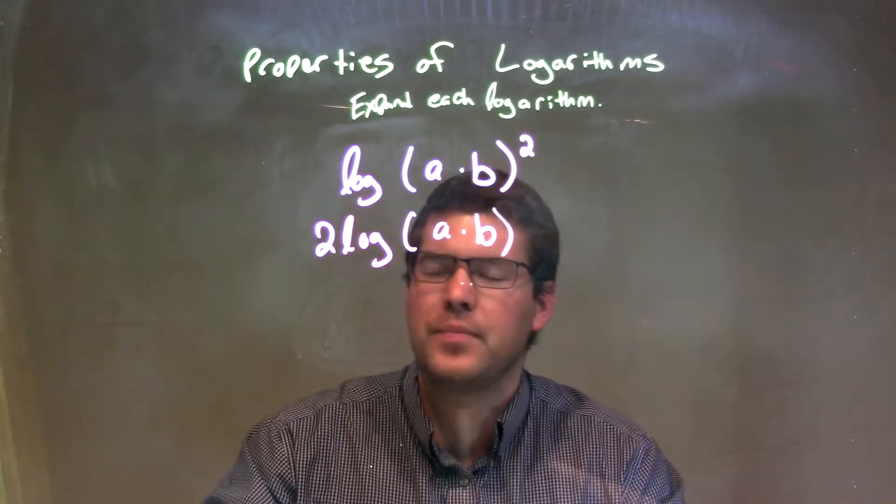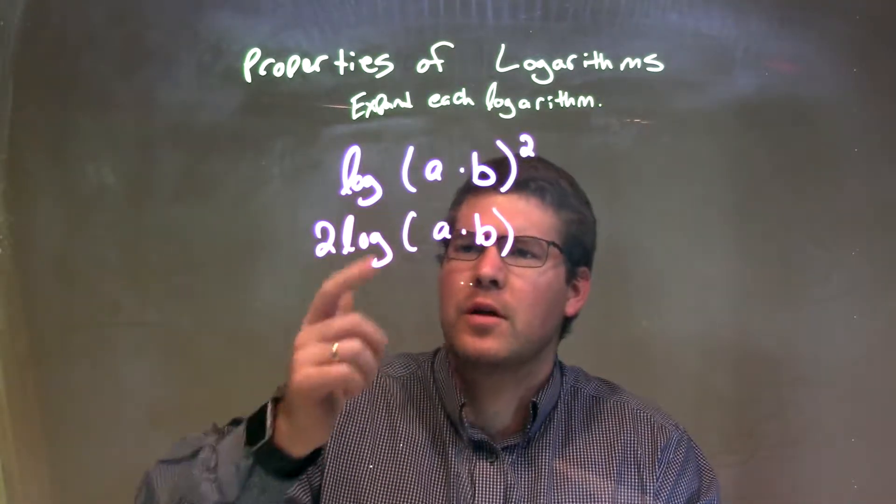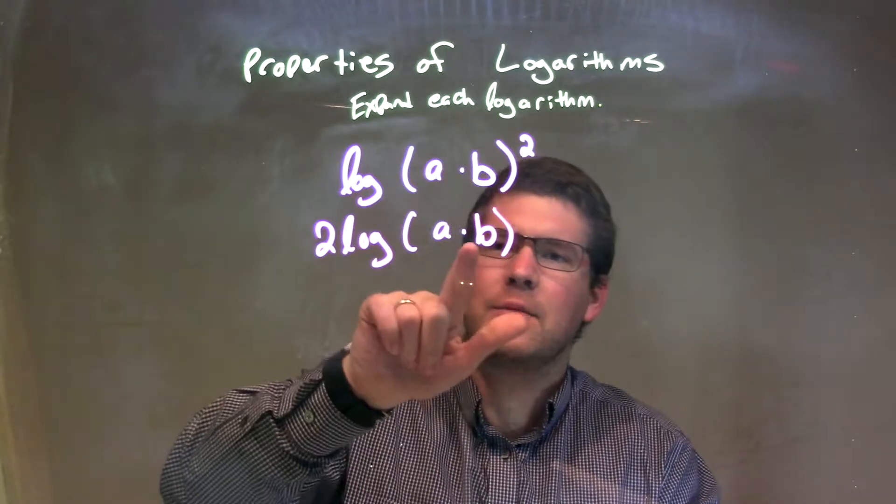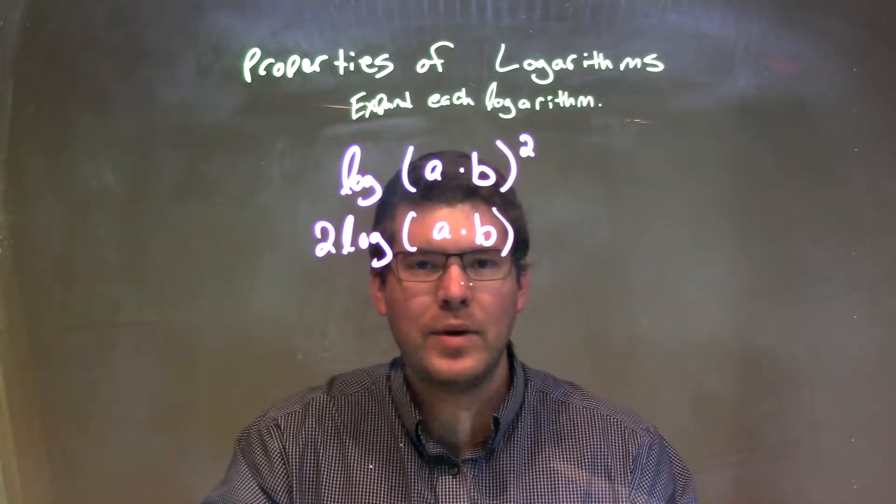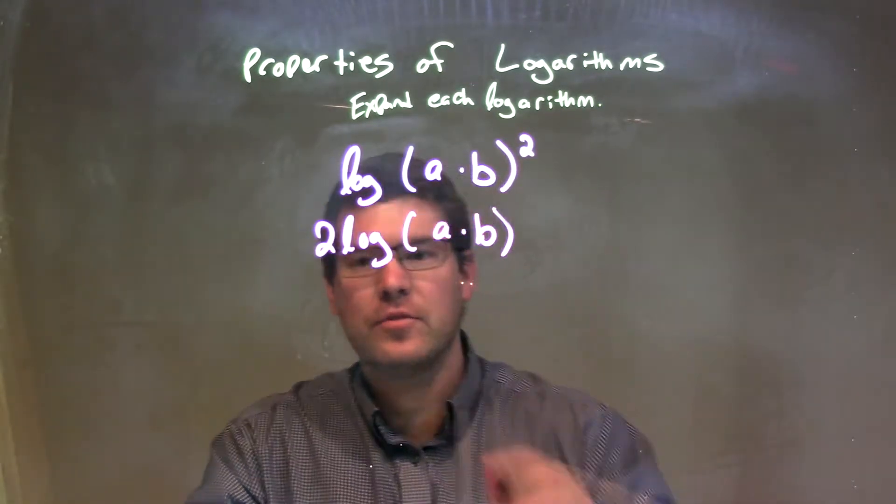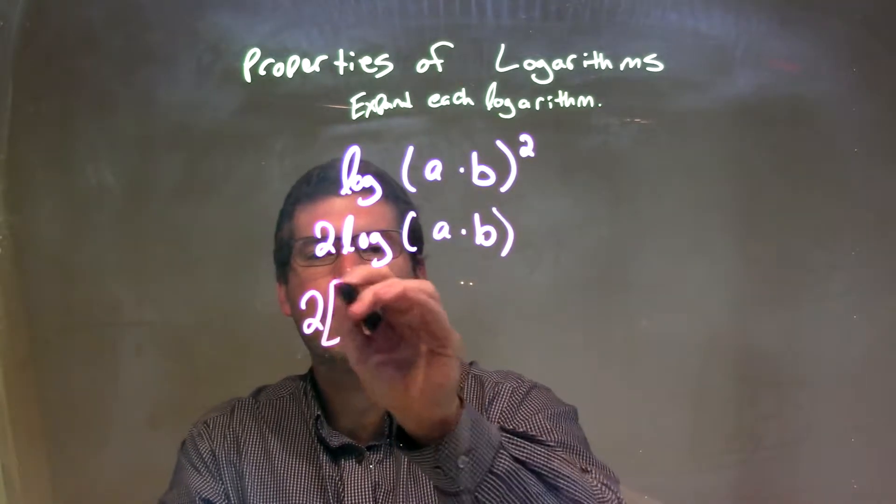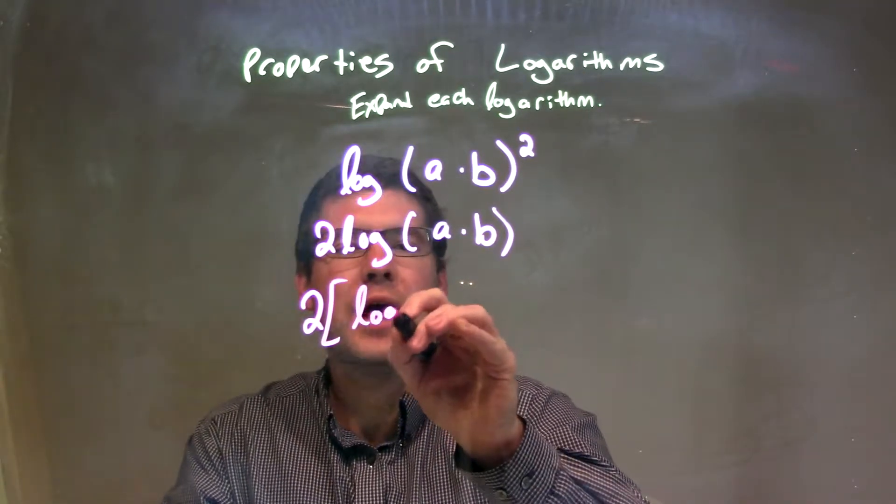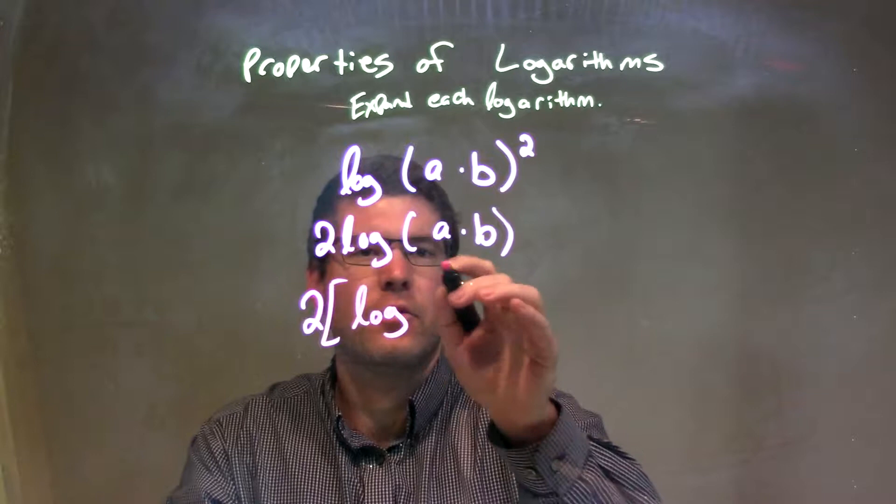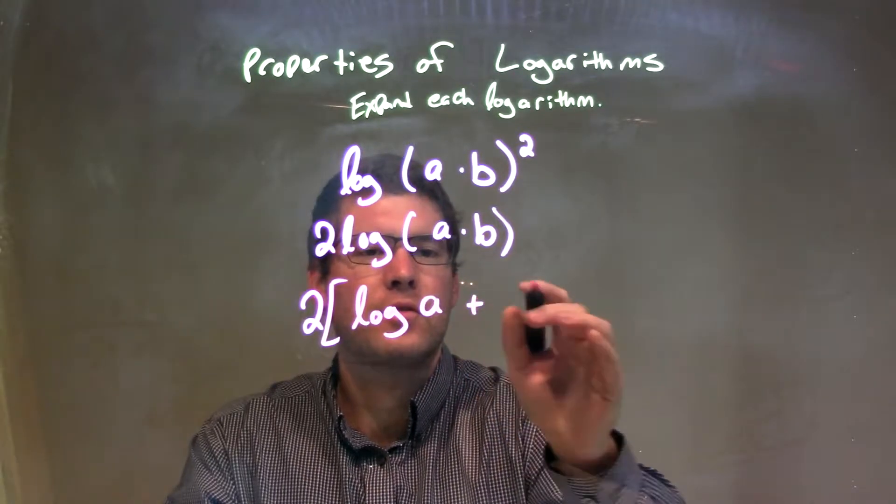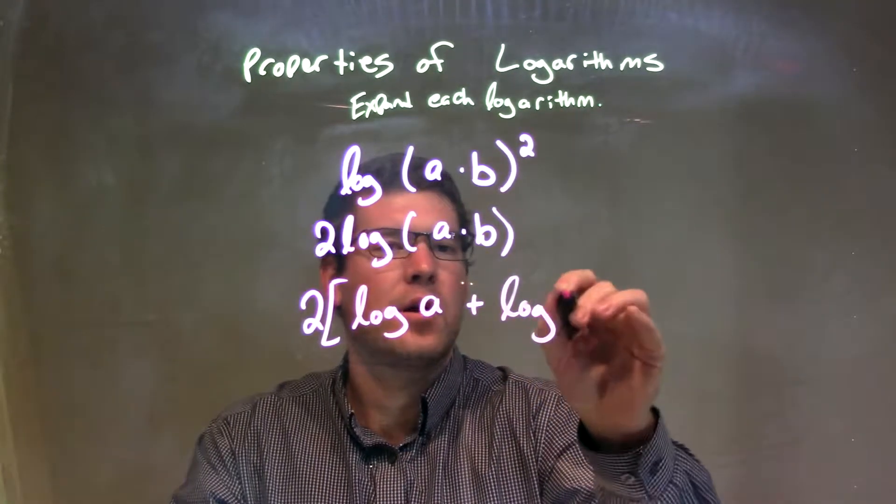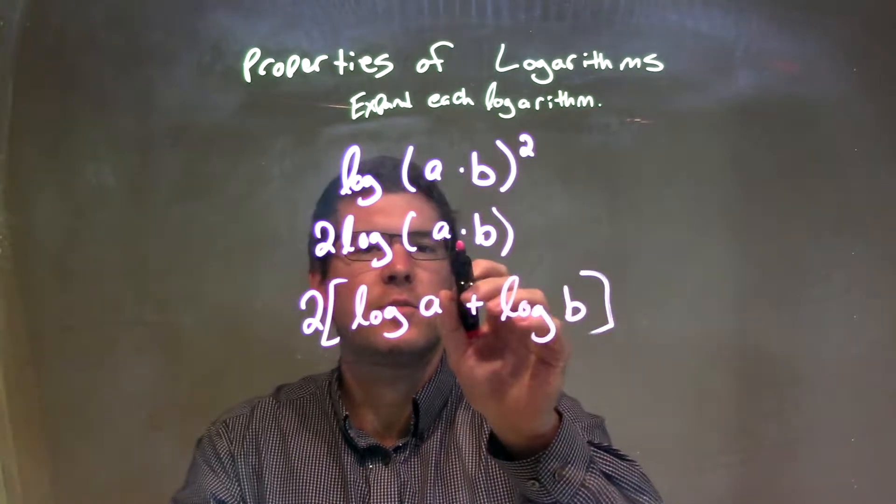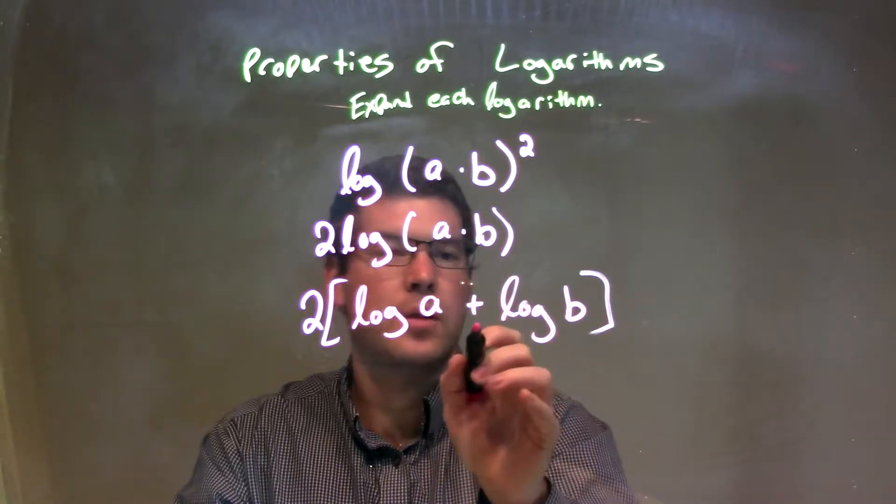Okay, pretty simple so far. Well, that 2 out front, log of a times b - I need to keep separating that multiplication. We know that can be an addition, so when I write my 2 out front, I'm going to bracket in this expansion: log of a plus log of b. That's how we expand the multiplication.